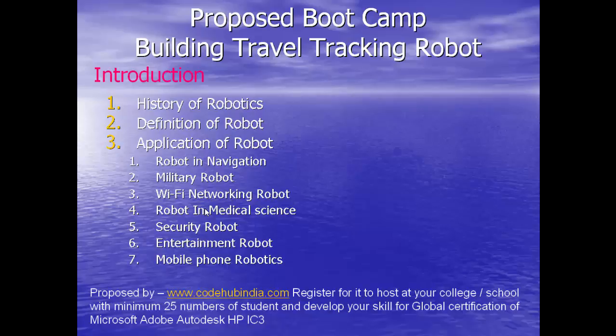A mobile robot is an automatic machine that is capable of locomotion. Mobile robots have the capability to move around in their environment and are not fixed to one physical location. They can be autonomous (AMR — Autonomous Mobile Robot), capable of navigating an uncontrolled environment without physical or electromechanical guidance devices, or they can rely on guidance devices to travel a predefined navigation route in a relatively controlled space (AGV — Autonomous Guided Vehicle).